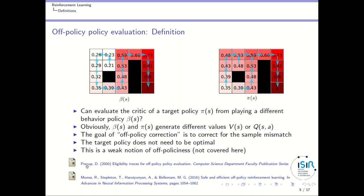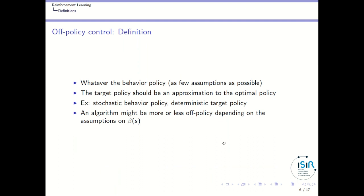If you want to know more about off-policy policy evaluation, you should read the seminal paper by Doina Precup and more recent papers by Rémi Munos in the context of deep reinforcement learning. Now let's switch to the off-policy control case, which is our focus in this class. The idea is that, with as few assumptions as possible on the behavior policy, you want to learn a target policy as close as possible to the optimal policy.